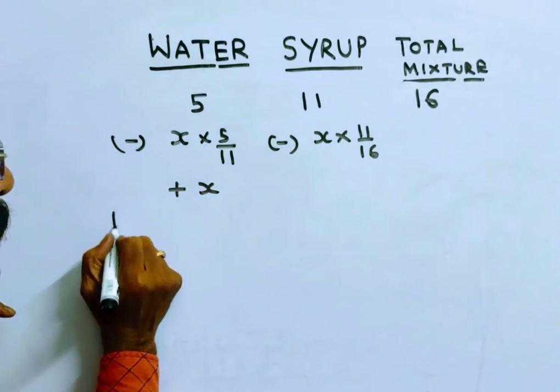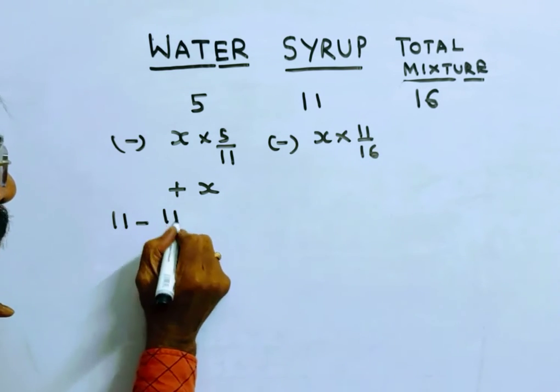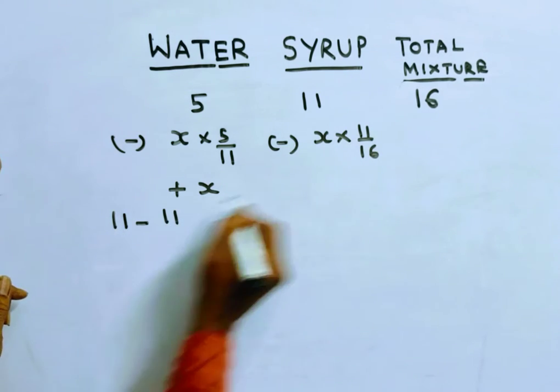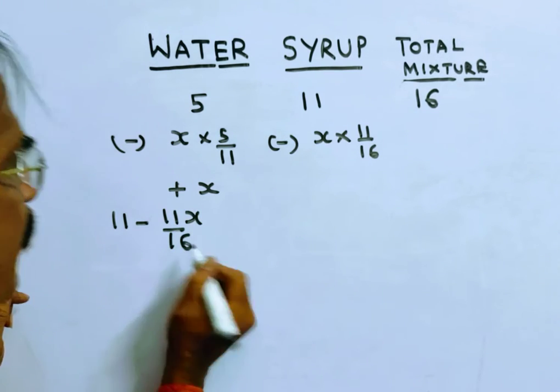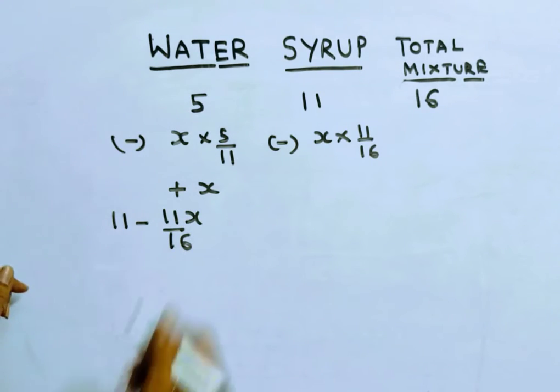Now syrup: 11 minus 11x by 16. Initially we have 11 parts, of which 11x by 16 is drawn. This is the resultant syrup.